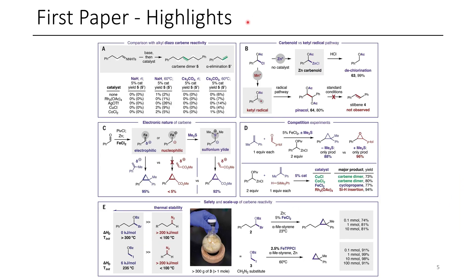Some highlights of this paper: here you can see that when they treat this gem haloester species with zinc, they form a zinc carbenoid, and this will just undergo protodechlorination, although if they treat this with elemental manganese, this will undergo a radical pathway and does pinacol-type coupling. And once this dimer is formed, they are able to eliminate to form stilbene under the typical reaction conditions.